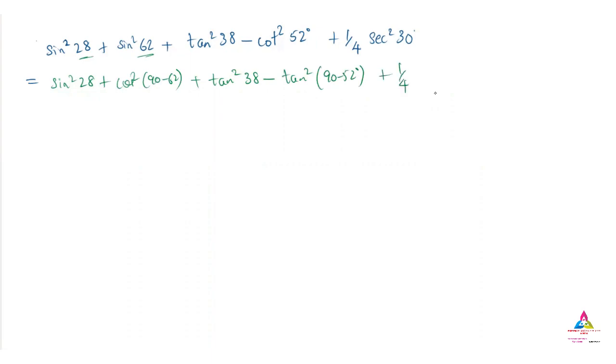We have to find secant 30 degrees, a reciprocal of cos 30. Cos 30 is nothing but root 3 by 2, so it is root 3 by 2 we have to consider.